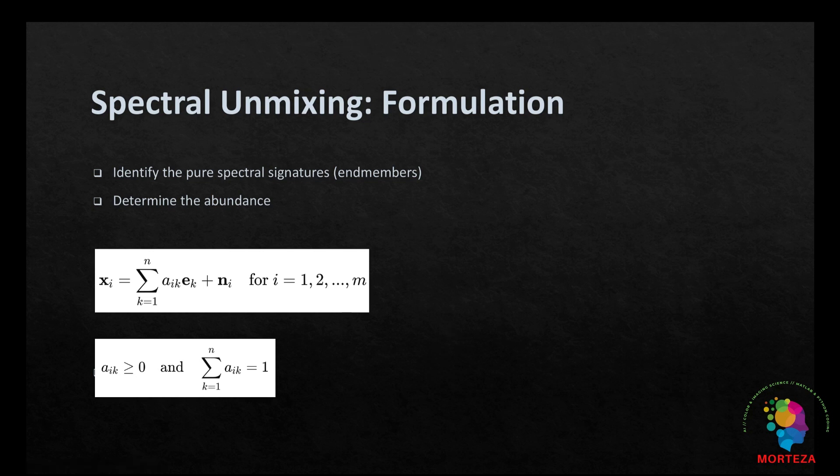The linear mixture model is often used for this and the formulation is as shown here, where X_i is the observed spectral vector for pixel i, A_ik is the abundance of the kth endmember in pixel i, and E_k is the spectral signature of the kth endmember.